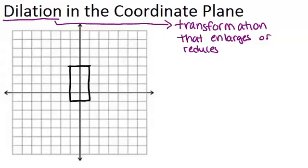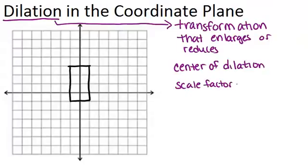Any time you do a dilation, you need to know two things. You need to know the center of dilation, which is where everything is going to be stretched from. And you also need to know the scale factor, which is often denoted by the letter K. When we're working in the coordinate plane, the center of dilation is going to almost always be the origin, (0,0), unless otherwise noted.